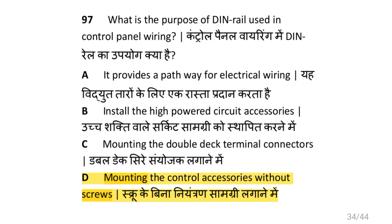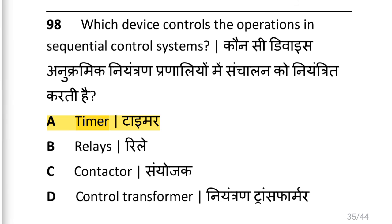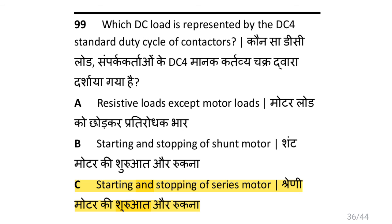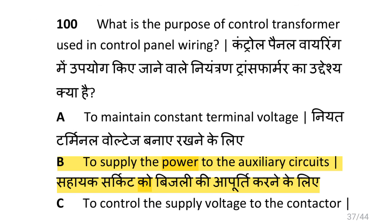What is the purpose of DIN rail used in control panel wiring? i.e. mounting the control accessories without screws. Which device controls the operation in sequential control systems? i.e. timer. Which DC load is represented by the DC4 standard duty cycle of contactors? i.e. starting and stopping of a series motor. What is the purpose of a control transformer used in control panel wiring? i.e. to supply power to the auxiliary circuit.